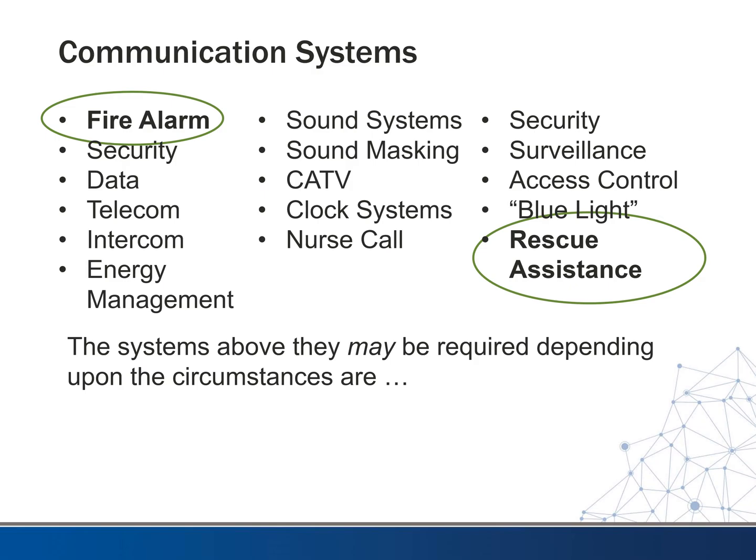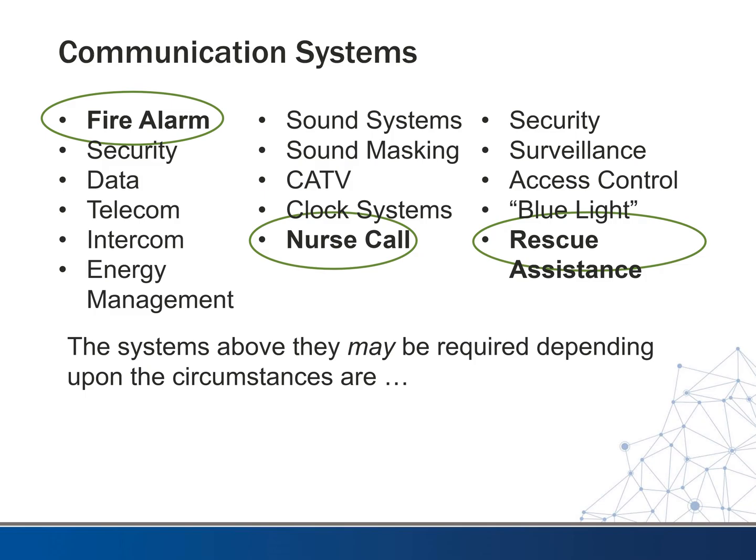The other required system is rescue assistance. If you have a multi-story building that utilizes an elevator — usually for buildings four stories or taller — we dedicate areas in the stairwell where someone in a wheelchair can get help. You're not supposed to use elevators during a fire, so if they can't go down the stairs by themselves, we designate areas of rescue assistance with signage. In that stairwell we put some means of communication, usually down to a central location at the front desk or front door.